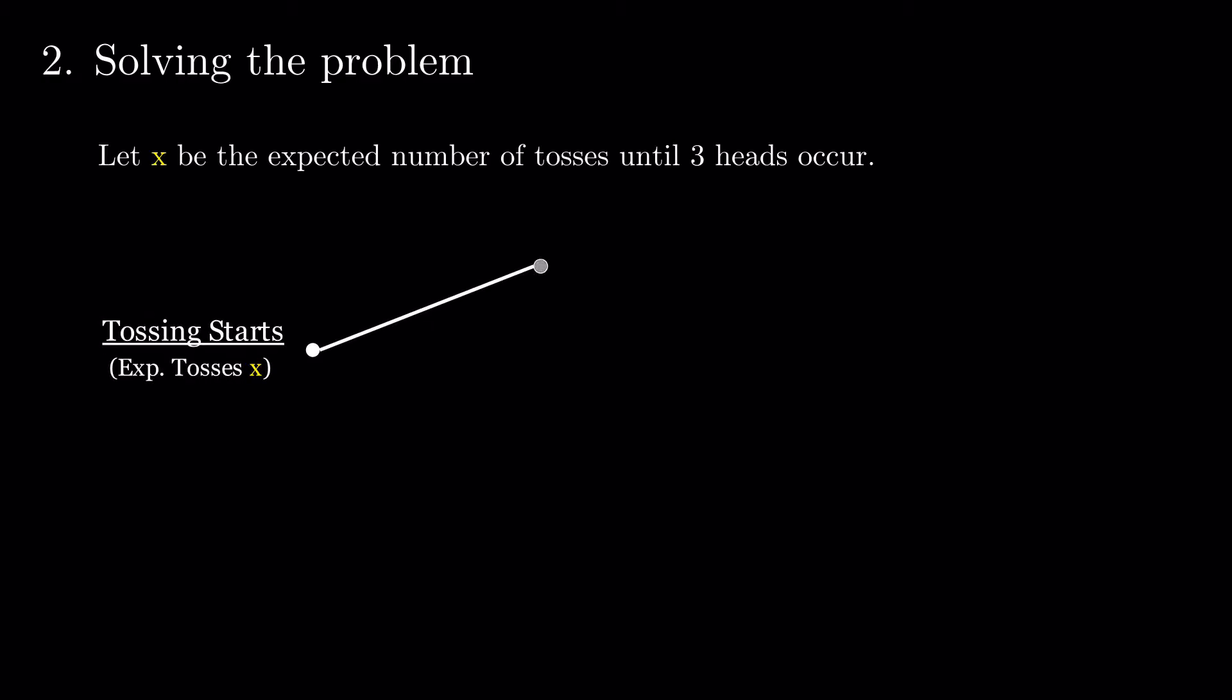At the beginning, there is a 50% probability to roll tails. In this situation, we had one toss, but we made no progress towards the consecutive heads.